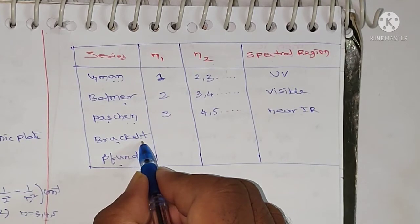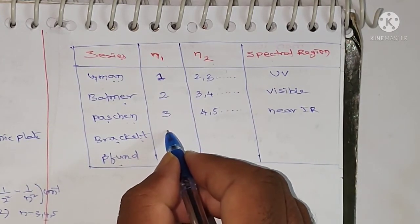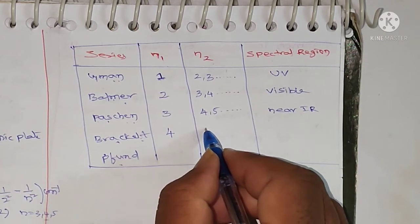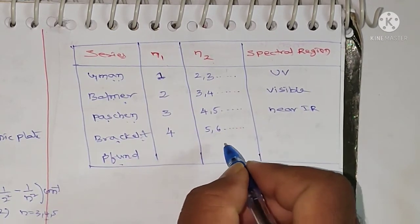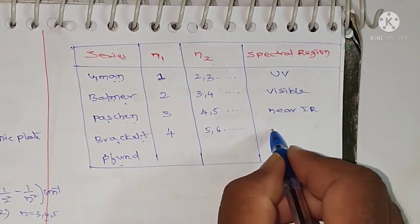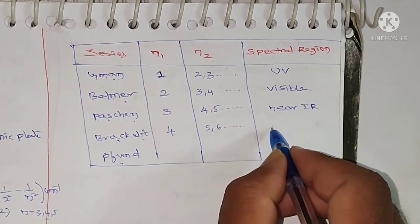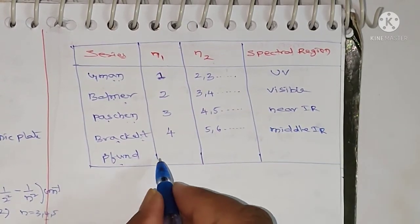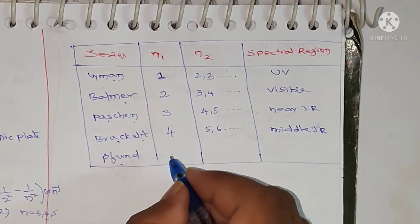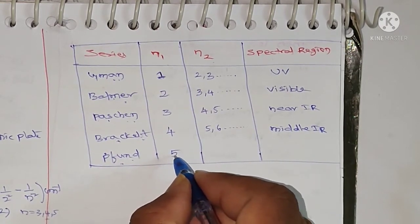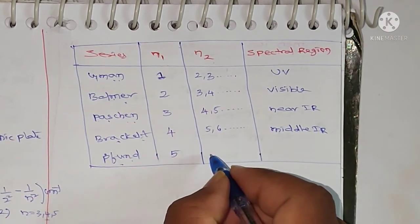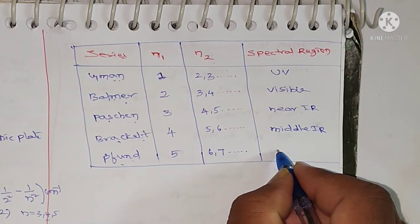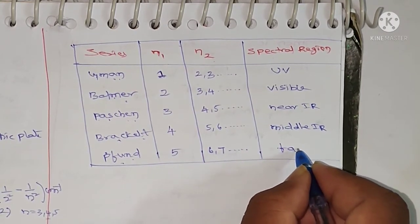Brackett series forms when excited electrons come back to the lower fourth energy level from the fifth, sixth, and so on. Pfund series forms when excited electrons come back to the lower fifth energy level from the sixth, seventh, and so on, and this Pfund series appears in the region of far IR.